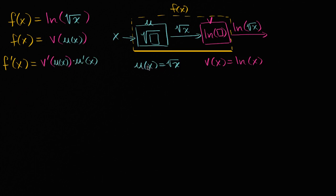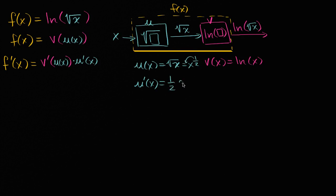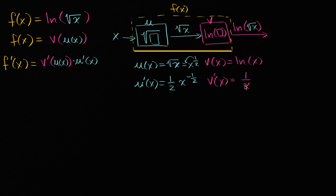We know how to take the derivative of u(x) and v(x). u'(x): remember, √x is just x^(1/2), so we use the power rule — bring the 1/2 out front, giving (1/2)x^(1/2 − 1) = (1/2)x^(−1/2). And v'(x): the derivative of ln(x) is 1/x, as shown in other videos. So we now know what u'(x) and v'(x) are, but what is v'(u(x))?